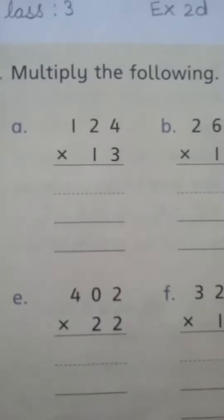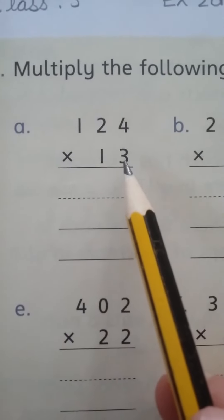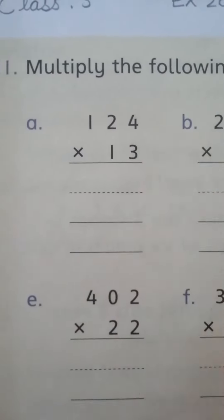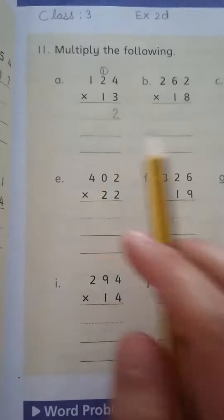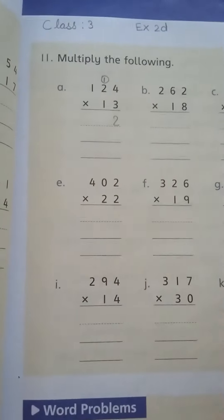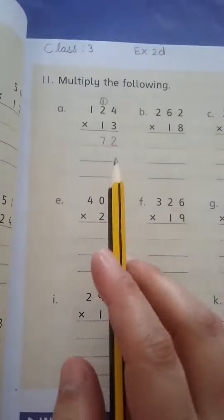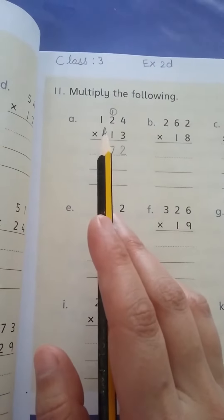We'll start from ones. Three fours are 12. Three twos are six, plus this one is seven. Three ones is three.